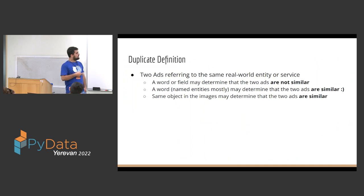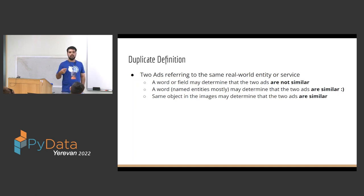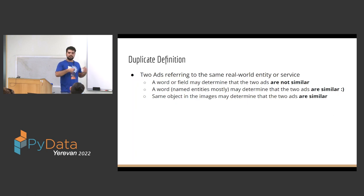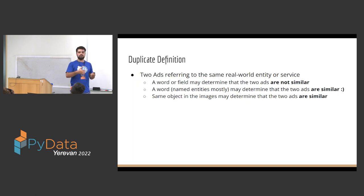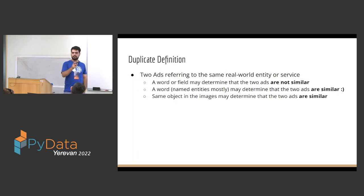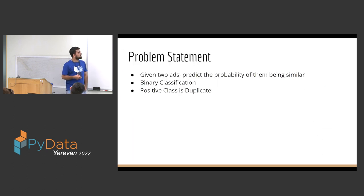A named entity in a field may also determine similarity. For example, there's an ad about a horse named Zack — one ad describes the horse in detail, and another ad mentions only the name Zack. Our operations team rejects the second one because it refers to the same real-world entity. Operations also finds similar objects in images and rejects duplicate posts based on them.